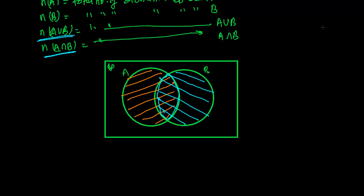We can create a formula — or you can say we have derived this formula ourselves from the figure. So the cardinal number of A union B: first you write the total number of terms in set A, that means this complete region — I am taking all the number of elements from A.